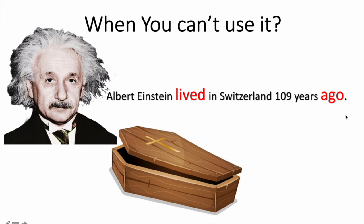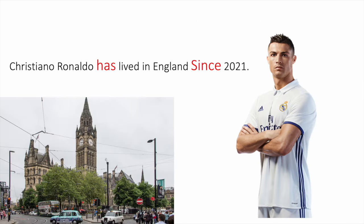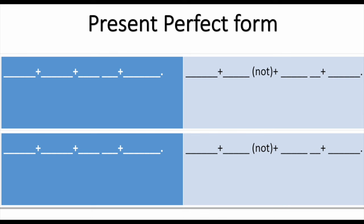Do not use 'ago' for present perfect simple — 'ago' is only for past simple. You can also use 'for' with present perfect simple. For example: 'Cristiano Ronaldo has lived in England for three years', 'for ten years.'